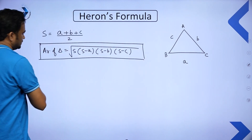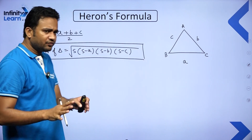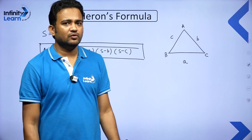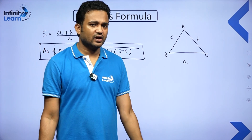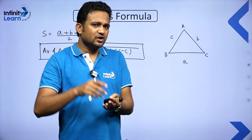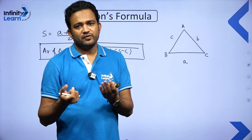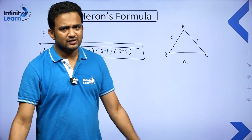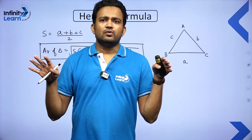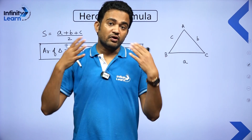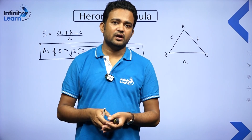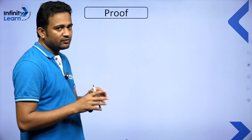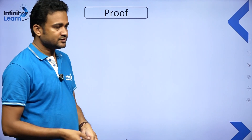So let us prove this. We can prove Heron's formula using trigonometry and the basic formula for area of a triangle. However, I will use Pythagoras' theorem and the basic concept of area of a triangle, because in class 9 some students do not have knowledge of trigonometric ratios, so I will use a basic method that everyone can understand.